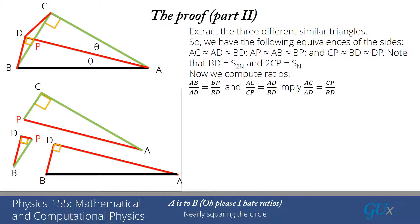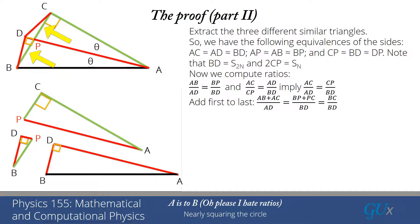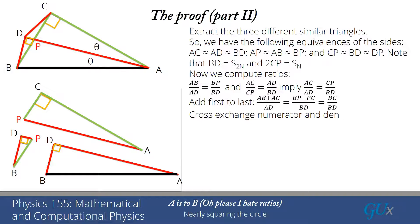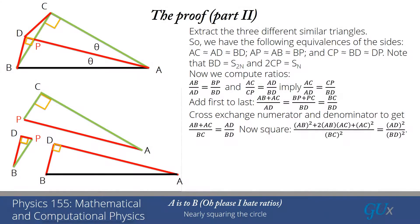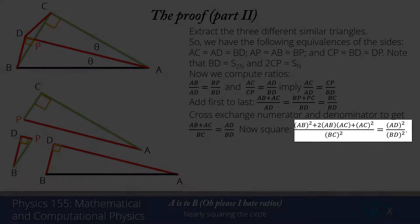Okay. That manipulation was pretty straightforward. Now we're going to take the first relation and the third relation and add them together. Because they both have common denominators, I can easily add them together. And I get AB plus AC over AD is equal to BP plus PC over BD. But now let's look at our triangles on the top. BP plus PC, I've already mentioned this before, that's equal to BC. That's the size of the SN. So that second term is equal to BC over BD. Okay. Now we're going to do the same cross exchange of numerator and denominator with the first and last terms. So we can rearrange that into AB plus AC over BC equals AD over BD. And then we're going to square that relationship. So we get AB squared plus 2ABAC plus AC squared over BC squared equals AD squared over BD squared.